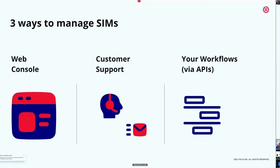There are three ways to manage IoT SIMs. The most common is a web console — single or multiple logins — to activate SIMs, manage pooled bills, and so on. Equally common, unfortunately, is going through the vendor's customer support or sales department: picking up the phone, calling your rep to order or activate SIMs. The third and ideal way, especially for a growing business, is to embed SIM management into your workflows by leveraging APIs.